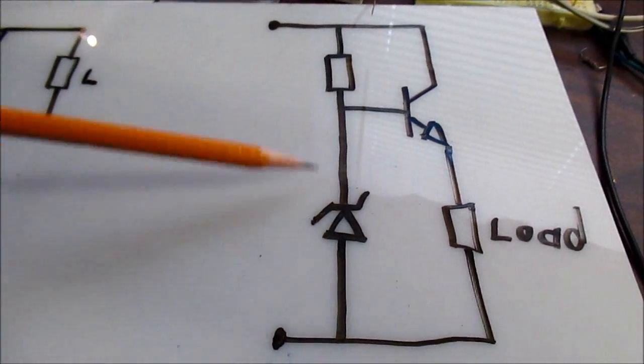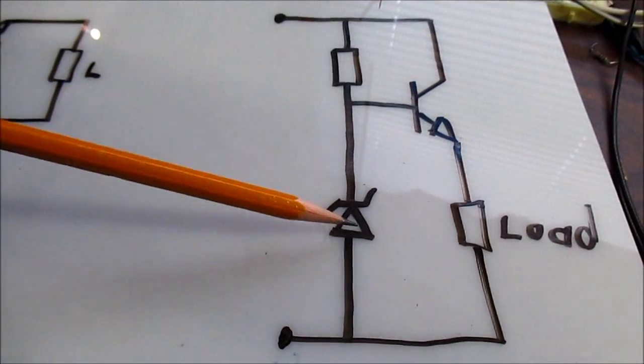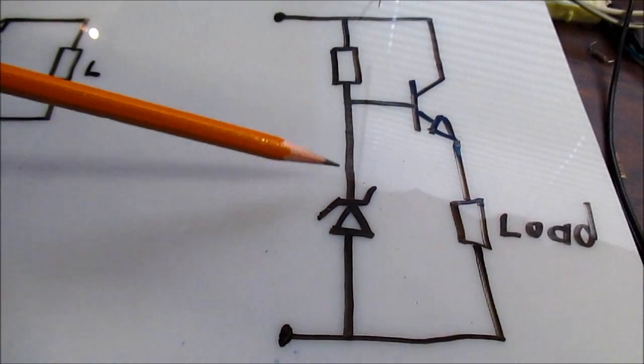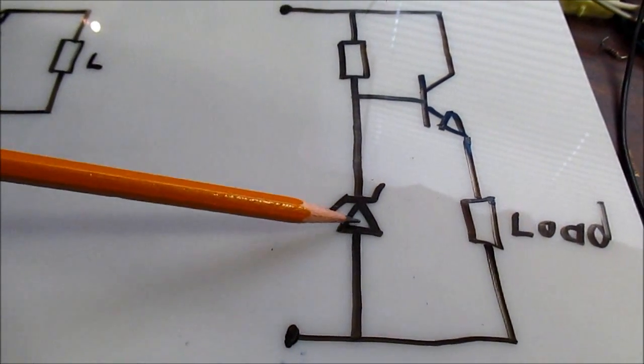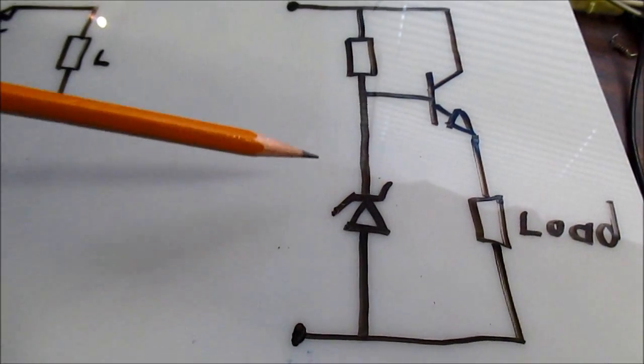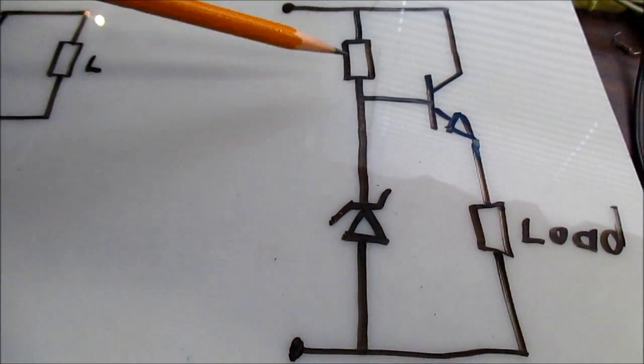Well, if you're familiar with the Zener diode, you know that it's set up reverse bias, and it has a certain voltage where it starts conducting. Well, for this video, I'll just say this is 5 volts.